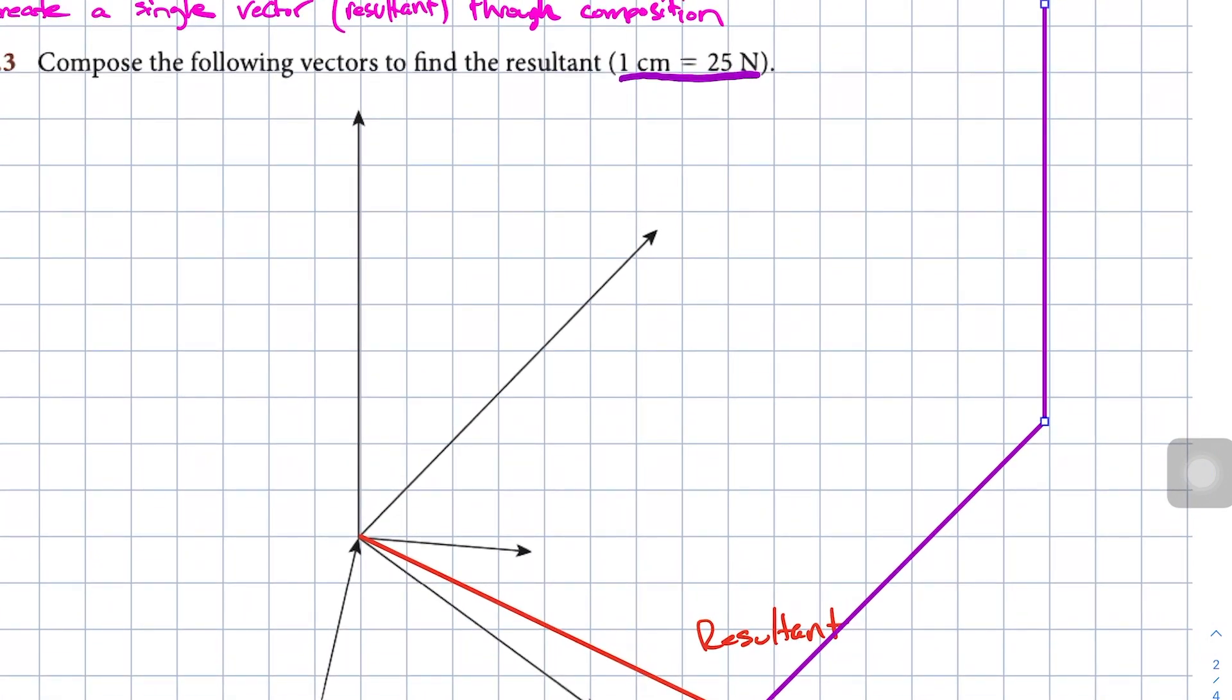So now I have them all arranged tip to tail, tip to tail, tip to tail. Remember that these two vectors right here, we already composed into the red resultant vector. So I didn't arrange those because we've already done those.